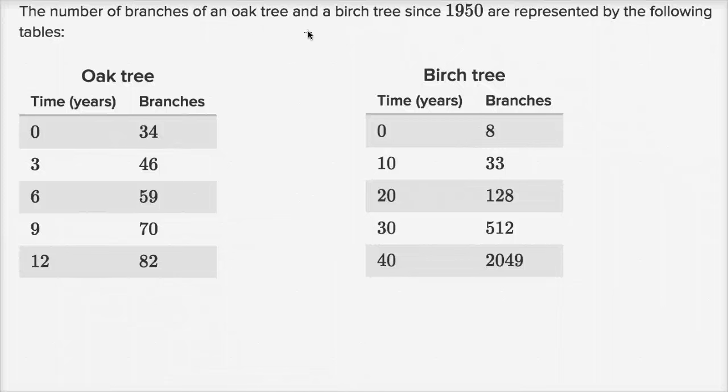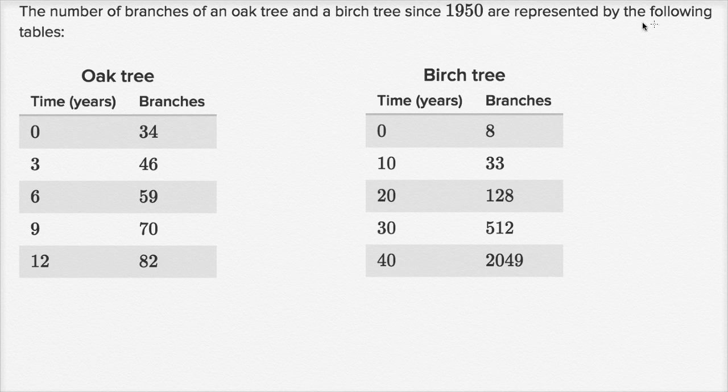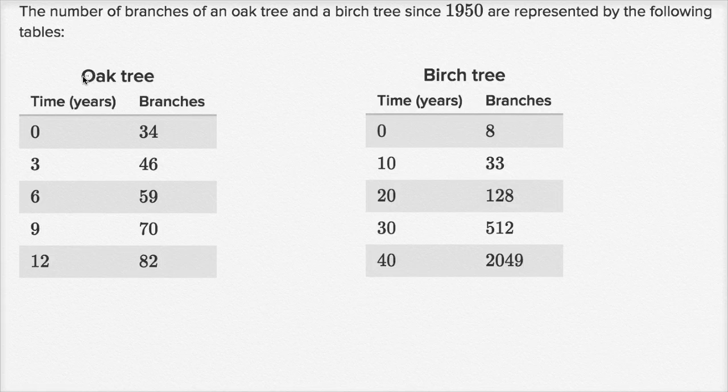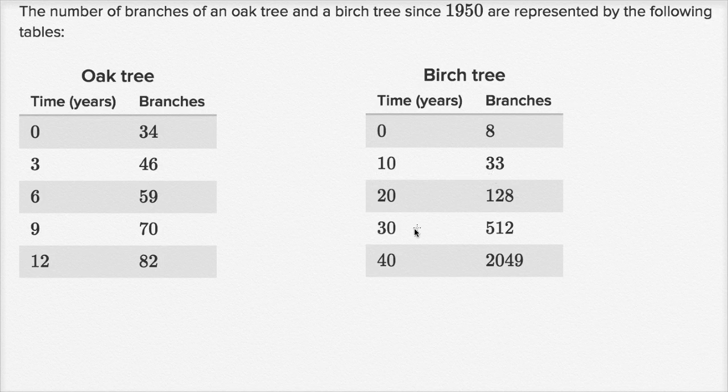The number of branches of an oak tree and a birch tree since 1950 are represented by the following tables. So for the oak tree we see when time equals zero it has 34 branches, after three years it has 46 branches, and so on. And the birch tree, they give us similar data: at the beginning has eight branches, in 10 years has 33 branches, and they give us all of that.